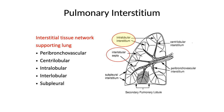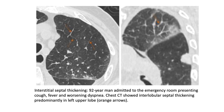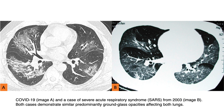The pulmonary interstitium — the interstitial tissue network supporting the lung — is peribronchovascular along the bronchus, then centrilobular, intralobular, interlobular, and subpleural. An example shows multiple consolidation areas with interlobular septal thickening, the arrows showing septal thickening on both sides. On the left we see COVID-19 pneumonia and on the right SARS 2003 CT scan — both show bilateral ground glass opacities very typical of viral pneumonia.